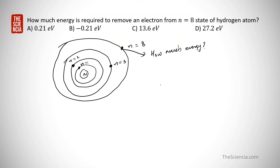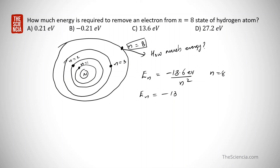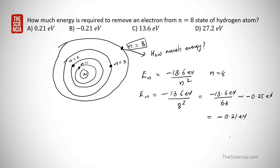We first find the energy of the electron at N equals 8. The energy formula for hydrogen is En equals minus 13.6 eV divided by N squared. For N equals 8, this is minus 13.6 eV divided by 64, which is approximately minus 0.21 eV. This is the energy possessed by the electron when it is at N equals 8.